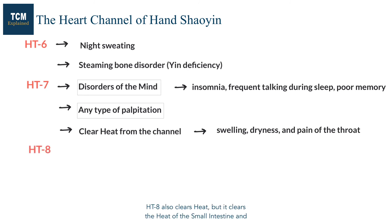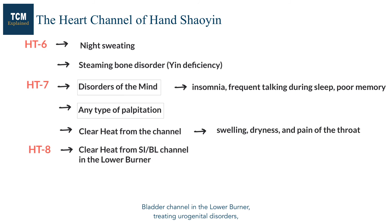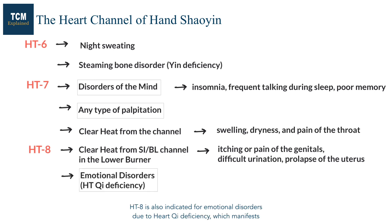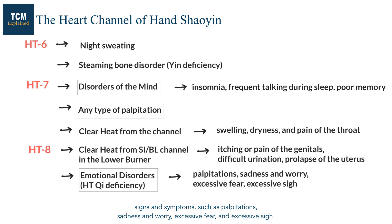Heart 8 also clears heat, but it clears the heat of the small intestine and bladder channel in the lower burner, treating urogenital disorders such as itching or pain of the genitals, difficult urination, and prolapse of the uterus. Heart 8 is also indicated for emotional disorders due to heart qi deficiency, which manifests signs and symptoms such as palpitation, sadness and worry, excessive fear, and excessive sighing.